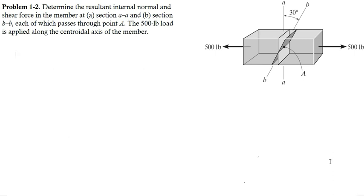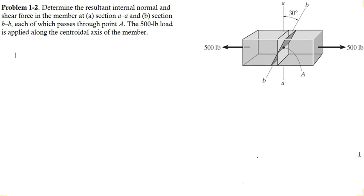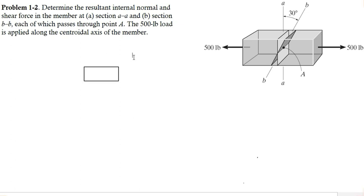Let's start with part A of the problem. For that we have to cut the member at section AA, and it's up to us whether we take the left side or the right side of the member in order to determine the normal and shear force at section AA. This is the free body diagram of the left portion of the member. There is a force of 500 pounds acting leftward.